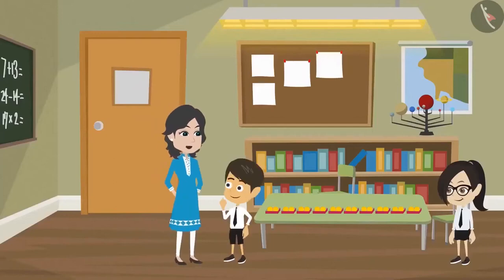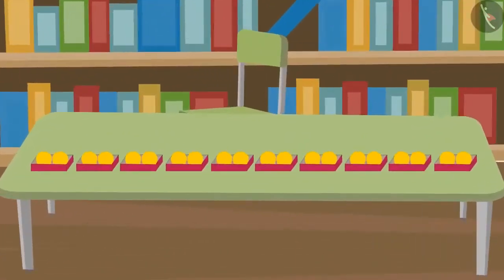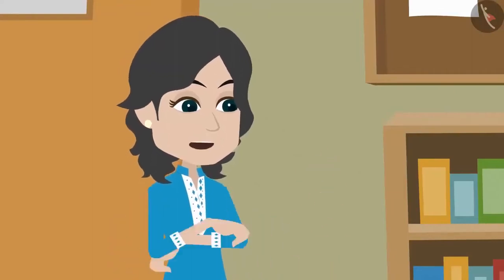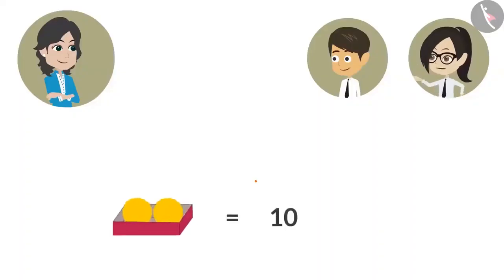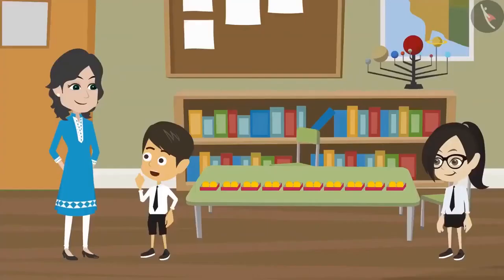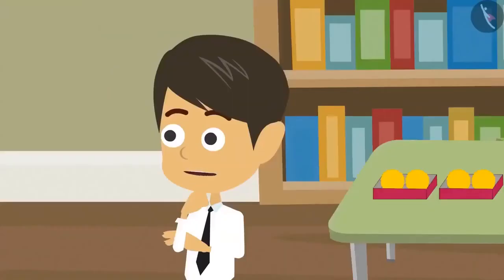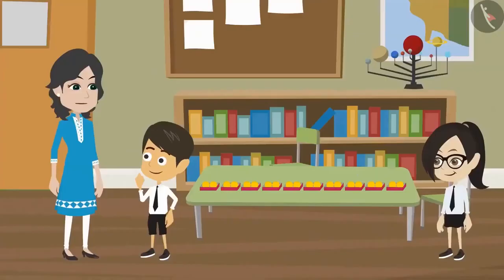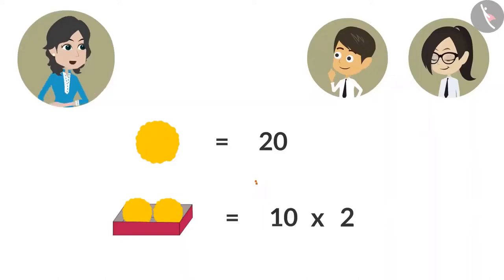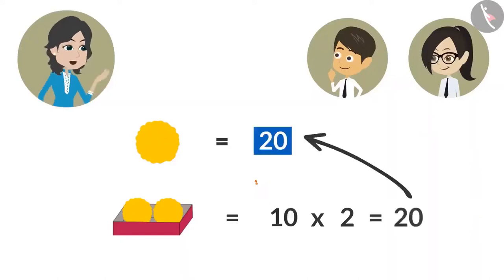Reyanch and Vandana, what are you counting? Madam, there are two ladoos in each of these boxes. We are trying to find the total number of ladoos in these boxes. That is very easy. Now Vandana, tell me how many boxes of ladoos are there? We have a total of ten boxes. That means you have a total of twenty ladoos. How could you find out so soon, madam? We have been counting for a very long time. It's easy. I have multiplied two with the number of boxes, so I got to know that there are twenty ladoos in ten boxes.